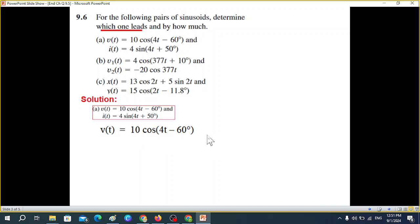Question 9.6 part (a): convert the current to cosine form. v(t) = 10 cos(t - 60°), and i(t) = 4 sin(t + 50°) = 4 cos(t + 50° - 90°) = 4 cos(t - 40°). So the magnitude is 4 and angle is minus 40°.